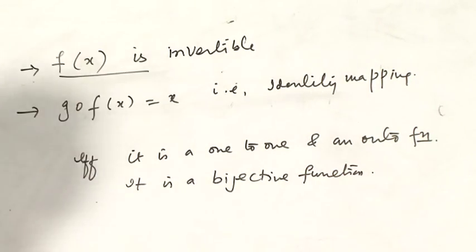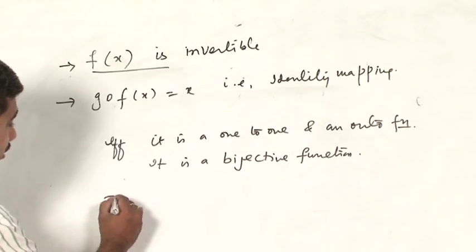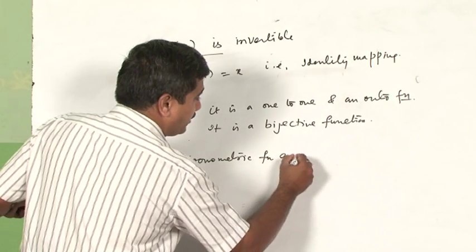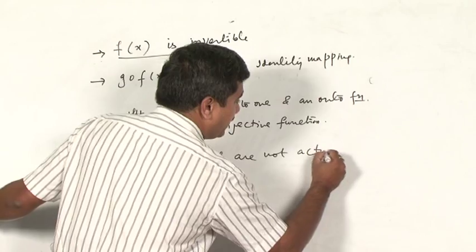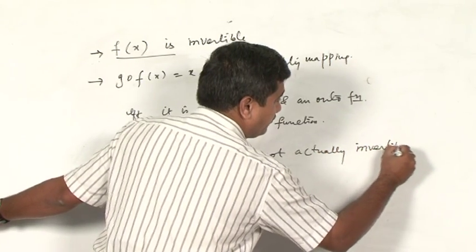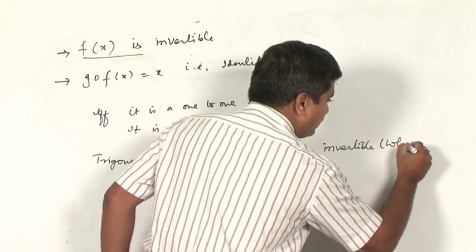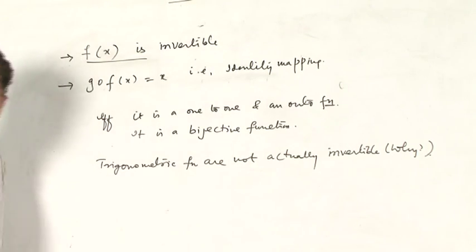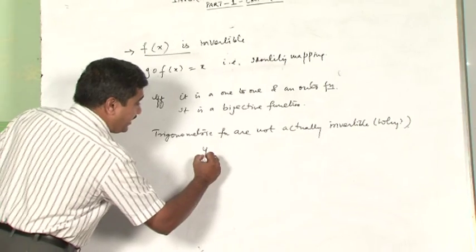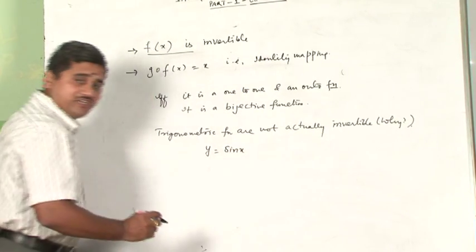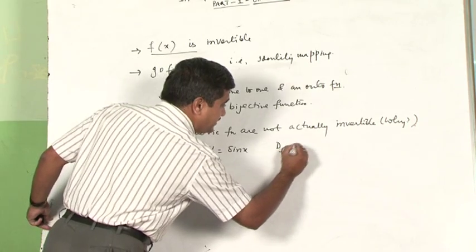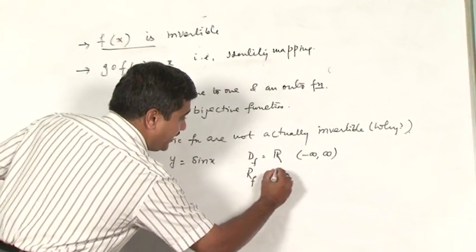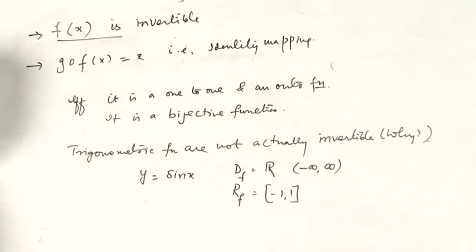The main reason for this is that all trigonometric functions are not actually invertible. This is a very important question to understand: why are the trigonometric functions not invertible? The reason is that if you take y = sin x, the domain of this function is ℝ, written as minus infinity to plus infinity, while its range is the small interval [-1, +1].